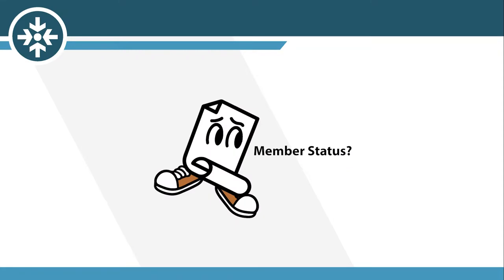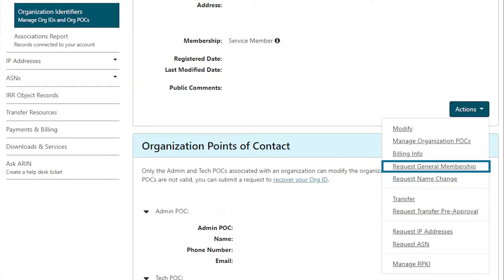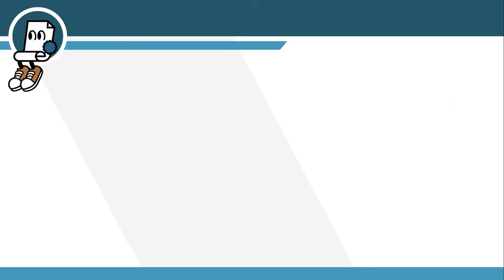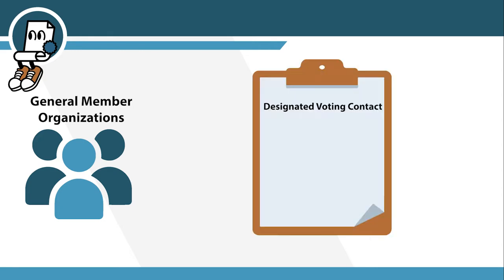Not sure what your organization's member status is? You can check your status in your ARIN online account. If your organization is currently a service member and eligible to request general membership, you can access the general member request form through the actions drop-down menu on your organization information. General member organizations must have a valid designated voting contact and be in good standing, with no outstanding or overdue fees, 45 days prior to the start of the election to be eligible to vote.